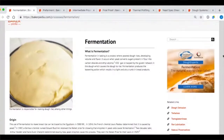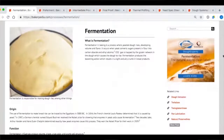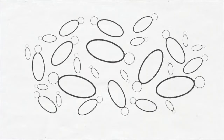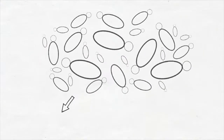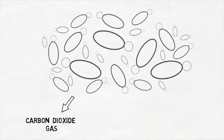Yeast is a single-celled microorganism, part of the fungus kingdom. It promotes alcoholic fermentation by feeding on sugars, making it an excellent leavener in baking. Yeast has three main roles in the fermentation process. Yeast produces gas in the form of carbon dioxide, caused by the yeast feeding on the fermentable sugars in the dough. The carbon dioxide creates gaseous expansion in the dough within the protein matrix, allowing it to increase in volume.